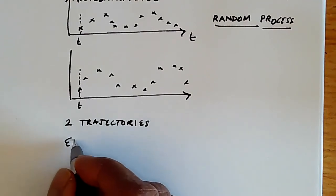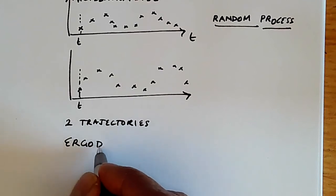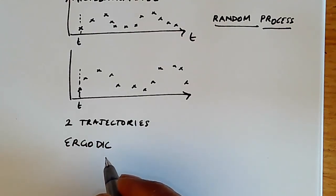And to do this, we need to be fairly sure that this is an ergodic stochastic process. In other words, the underlying Markov chain or underlying stochastic process has all the properties that you require for ergodicity that we discussed in stochastic processes.